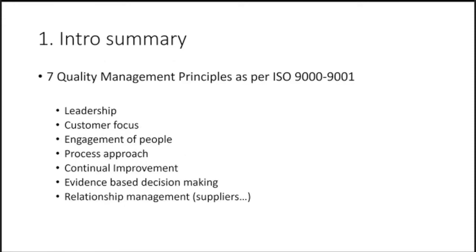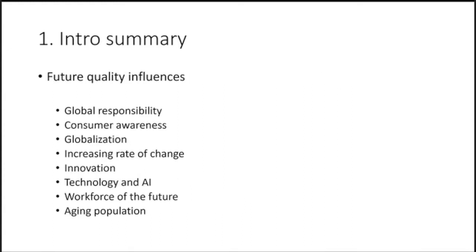The seven quality management principles as per ISO — a globally recognized certification — are: leadership, customer focus, engagement of people, process approach, continual improvement, evidence-based decision-making, and relationship management. Future quality influences include global responsibility, awareness of the consumer, AI, the workforce of the future, aging population, innovation, and globalization — all things our generation must think about when implementing quality structures and services.